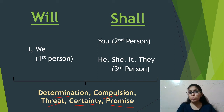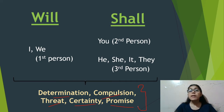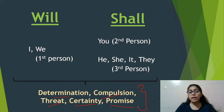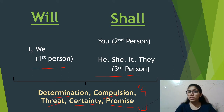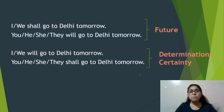So when you want to show determination, compulsion, threat, certainty, or promise to a second or third person, then you use will with I and we, and shall with the others. I hope you will understand these two things. Let's look at examples — it will become clear.